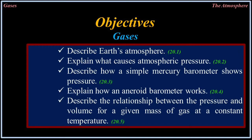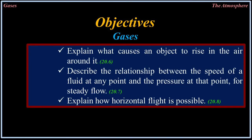Objectives. Gases: Describe Earth's atmosphere. Explain what causes atmospheric pressure. Describe how a simple mercury barometer shows pressure. Explain how an aneroid barometer works. Describe the relationship between the pressure and volume for a given mass of gas at a constant temperature. Explain what causes an object to rise in the air around it. Describe the relationship between the speed of a fluid at any point and the pressure at that point for steady flow. Explain how horizontal flight is possible.